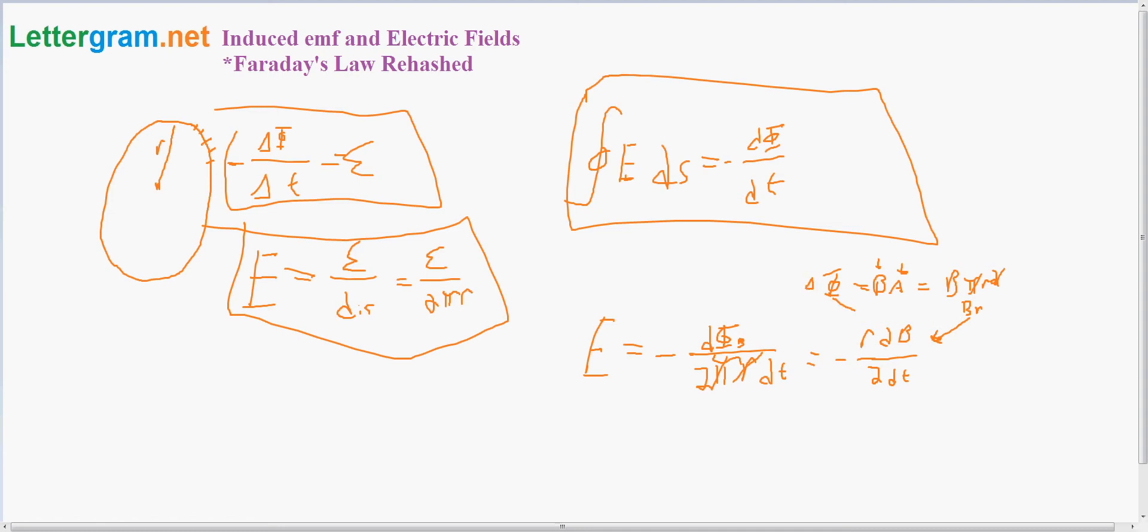But because we're taking the change in, it's the change in magnetic field. So since this is the change in flux, this is also the change in magnetic field. There you go. This also will give you the electric current inside of the field.